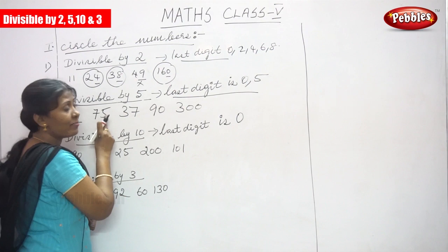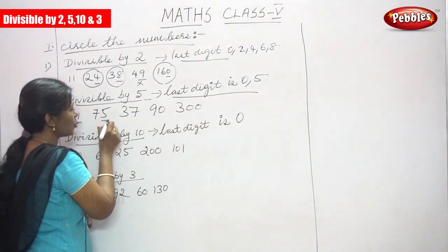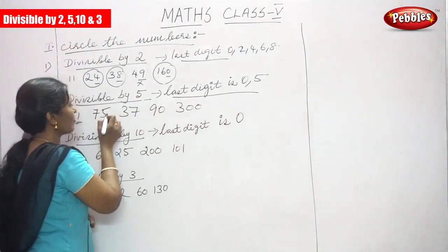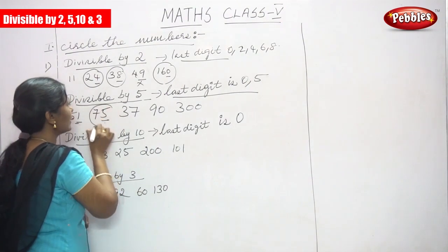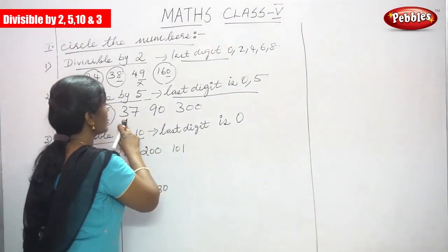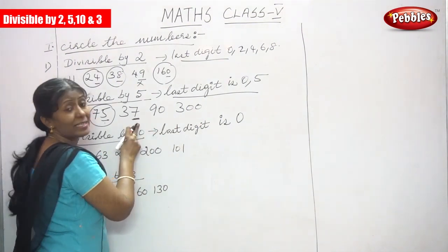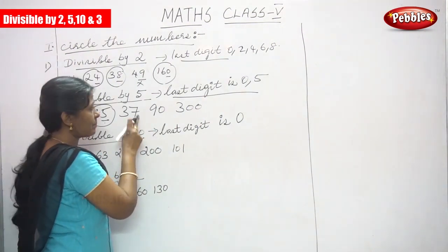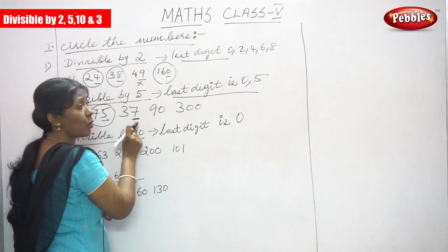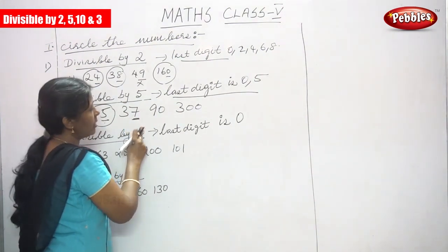75: the last digit ends with 5, so it is divisible by 5 — circle the number. Next number is 37: the last digit is 7, so it is not divisible by 5 because it does not end with 0 or 5.